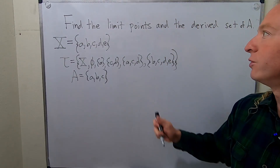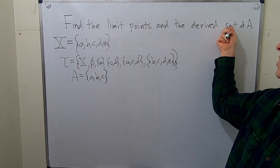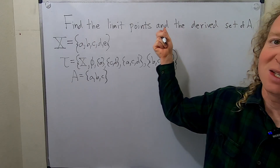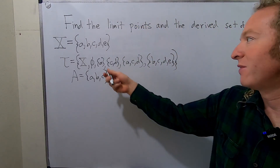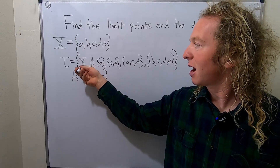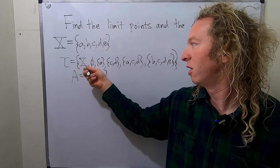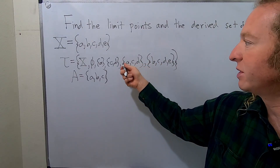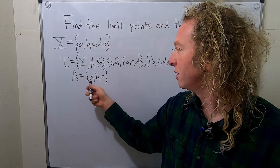Hi everyone. In this video we're going to find the limit points and the derived set of A. The derived set is the set of all limit points. We have a set X with elements A, B, C, D, E, and tau is a topology on X — a collection of open subsets. Our set here is A.